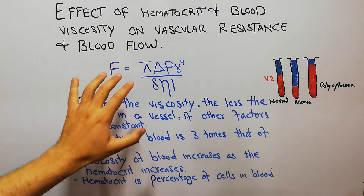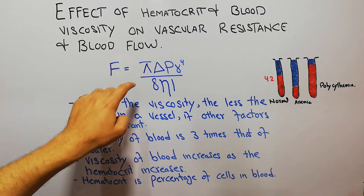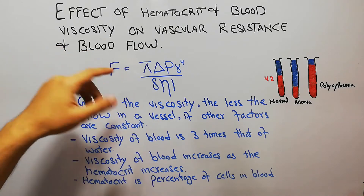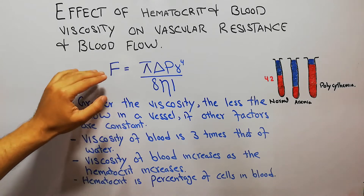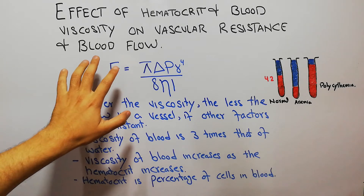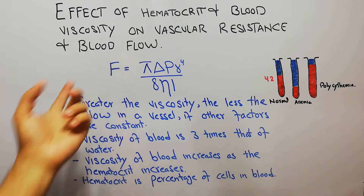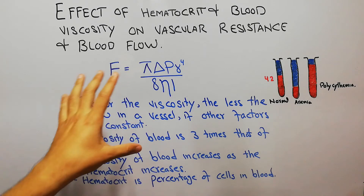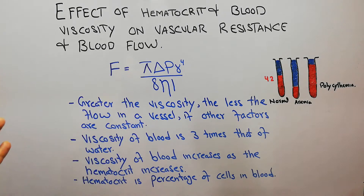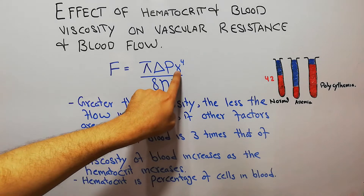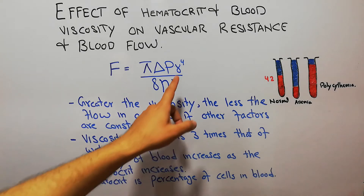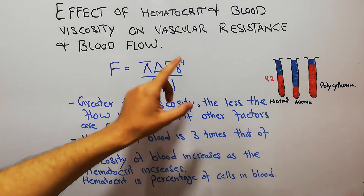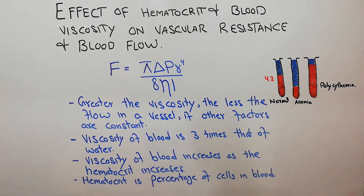We have previously discussed Poiseuille's equation for blood flow. This equation shows that there are many factors which affect blood flow. The most important factor we discussed previously was the diameter or radius of the blood vessel, because it is related to blood flow with the power of 4.